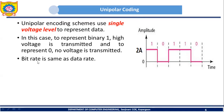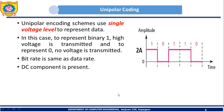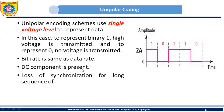In unipolar coding, the bit rate is the same as the data rate. You will also find a DC component in unipolar coding. There is one more drawback: loss of synchronization for long sequences of ones and zeros. So unipolar coding is simple, but it is not commonly used due to its many drawbacks.